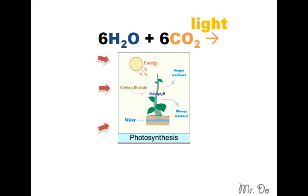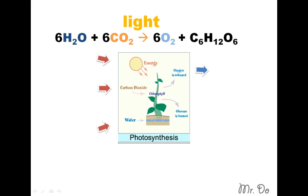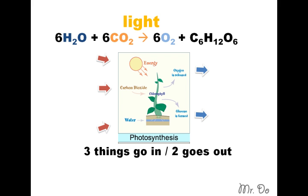Water, carbon dioxide, and sunlight produces oxygen and sugar, also known as glucose. And the above is the equation for Photosynthesis. Three things go in, two come out. So water, carbon dioxide, and sunlight will produce oxygen and sugar. That's Photosynthesis!